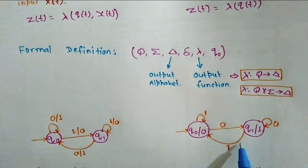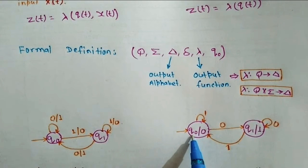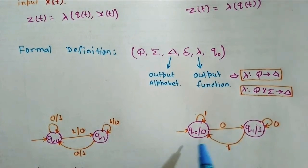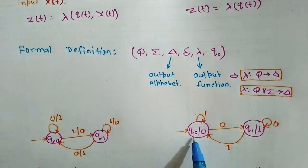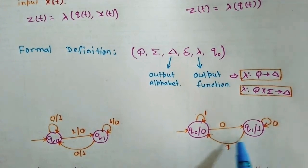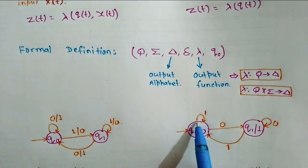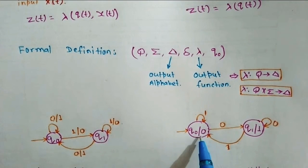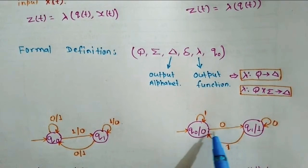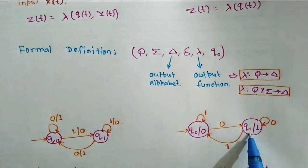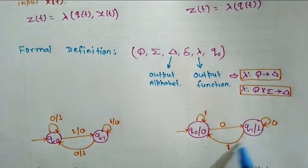The Moore machine looks like this. You have two states q0 and q1. The output of state q0 is 0 and the output of state q1 is 1. After reading 1 it stays in the same state and produces output 0, and after reading 0 it goes to state q1, and so on.